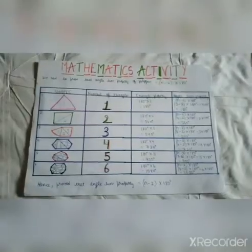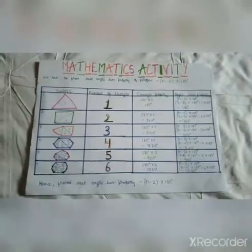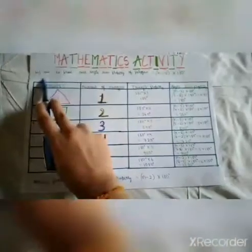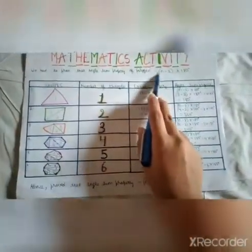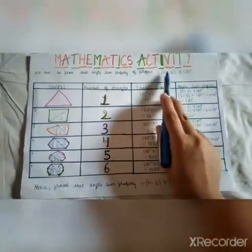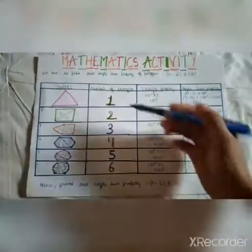Good morning everyone. Today I'll explain how to prove that the angle sum property of a polygon is (n-2) × 180 degrees, where n is the number of sides. In this mathematics activity, we have to prove that the angle sum property of a polygon is (n-2) × 180 degrees, where n is the number of sides.